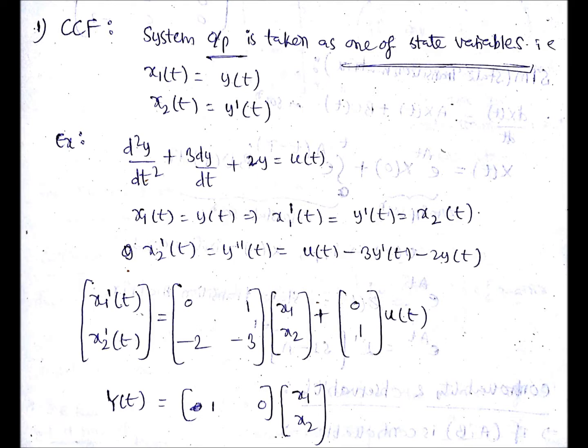Everyone knows that the state space representation is not unique, based upon how we are choosing the state variables it will vary. We are going to look at the controllable canonical form and observable canonical form.